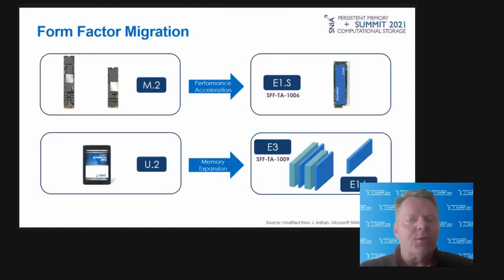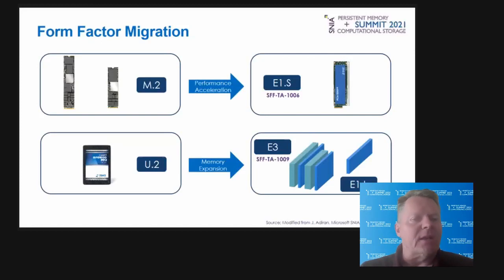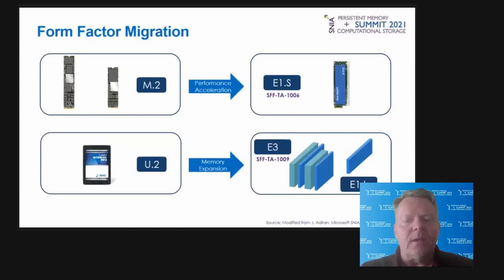The E1.S EDSFF specification from SNIA has addressed those limitations, as we will discuss. Similarly, the U.2 form factor on the bottom left also has some limitations — it has limited support and scalability for higher speeds. The E3 EDSFF form factor specifications enable better cooling than the U.2 and address scalability. The E1 and E3 form factor use cases are expanding and being adopted for DRAM memory, persistent memory, and other functions utilizing the new interconnect standards.